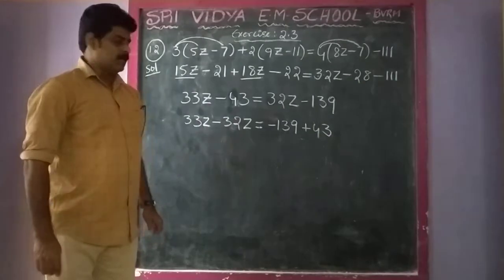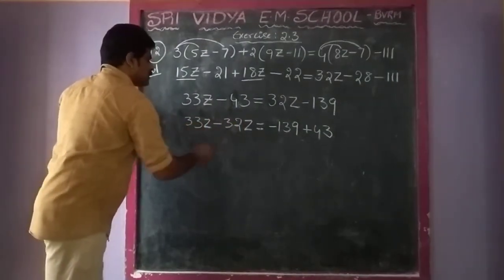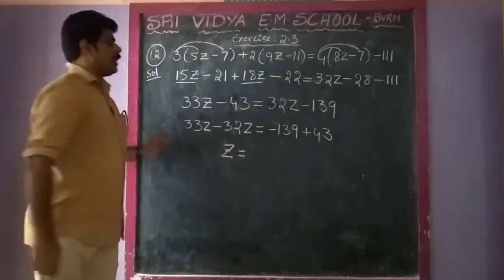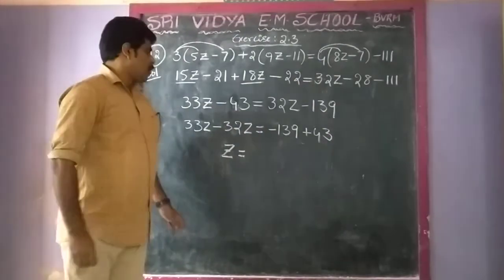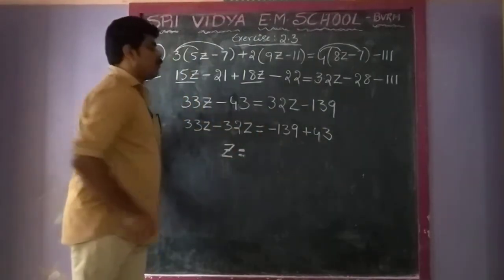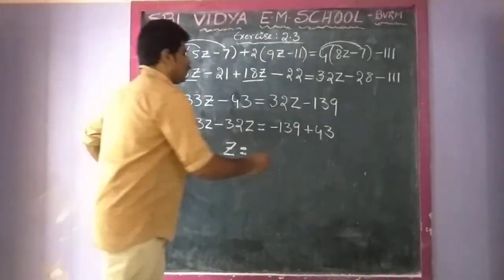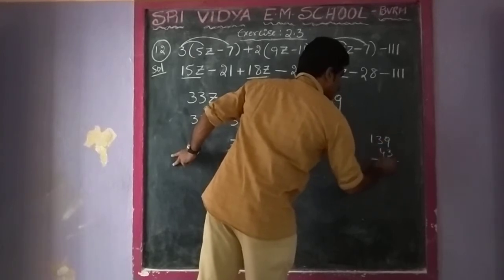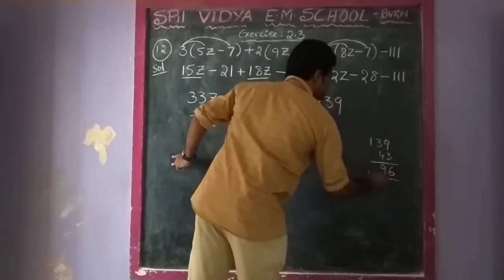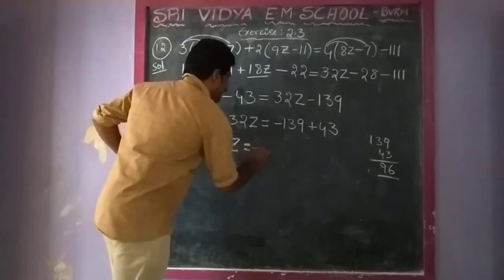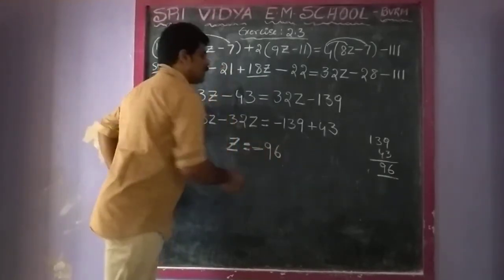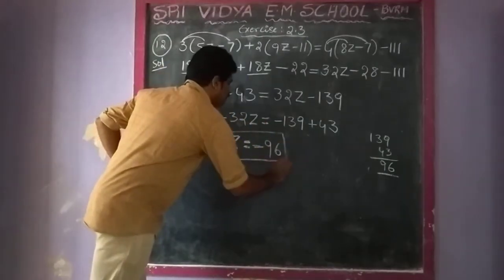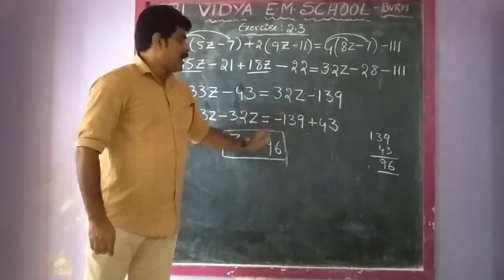Look at: 33z minus 32z is equal to minus 139 plus 43. So z equals: minus 139 plus 43. We compute: 9 minus 3 is 6, and 139 minus 43 gives 96. Therefore the value of z is equal to minus 96.